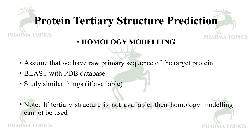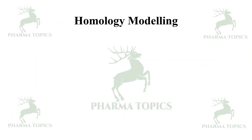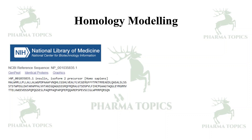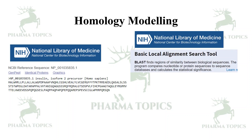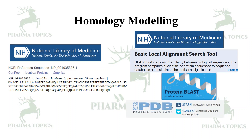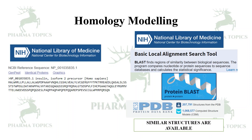If the tertiary structure is not available then homology modeling cannot be used — there should be at least a few structures available in the Protein Data Bank. From the NIH, that is the National Library of Medicine, you can select sequences, or use sequences you already have. You perform a BLAST — Basic Local Alignment Search Tool — a protein BLAST from the Protein Data Bank database, which analyzes similar structures. If similar structures are available, then we can do homology modeling.